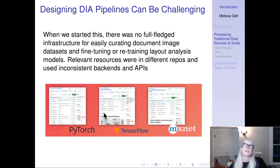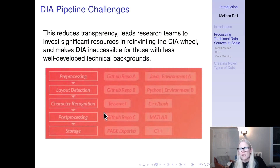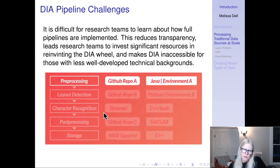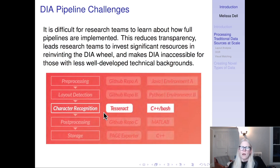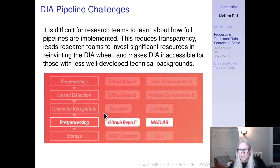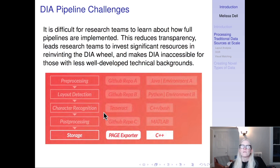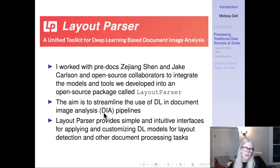The relevant resources, to the extent they existed, were in different repositories and used inconsistent backends and APIs. For example, maybe you needed to do pre-processing in Java, then layout detection in PyTorch, then character recognition using Tesseract called with C++, then post-processing in MATLAB. As you can see, this is convoluted — it's not going to be very reproducible or accessible to people without a strong programming background. So I worked with my pre-doctoral fellows Zhejiang Shen, Jake Carlson, and open-source collaborators to integrate the models and tools into an open-source package called Layout Parser.